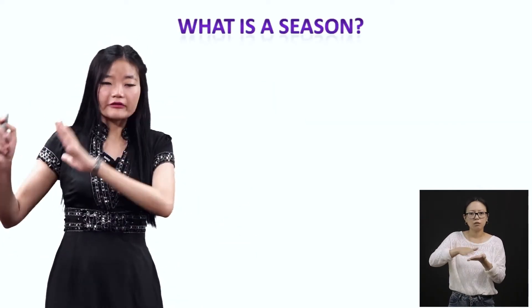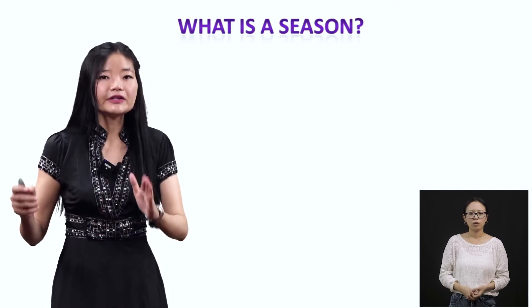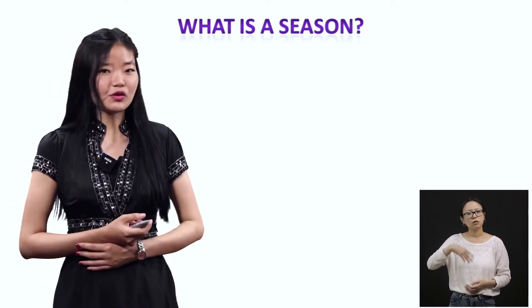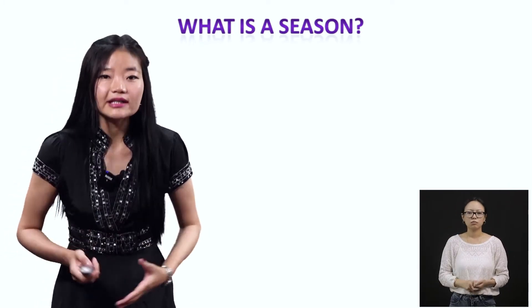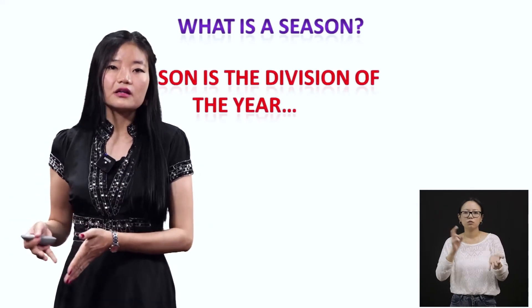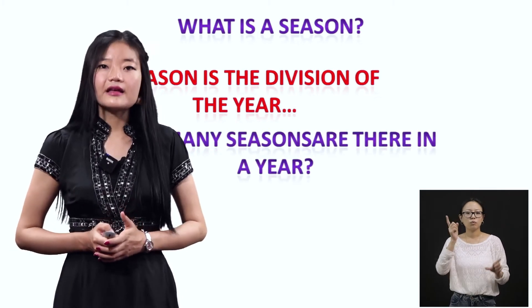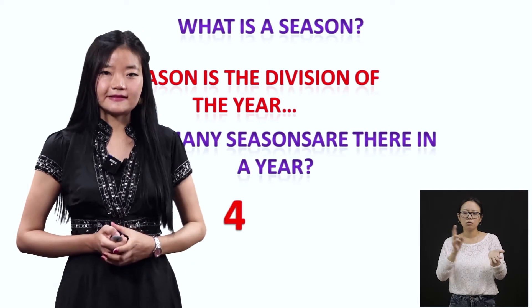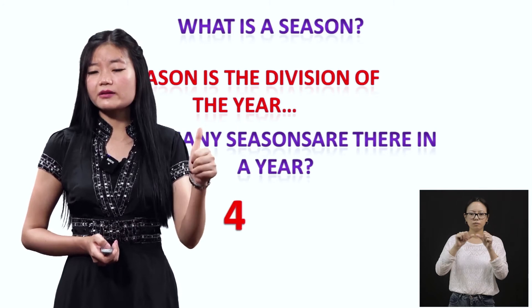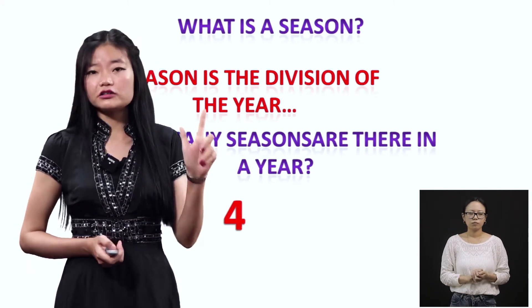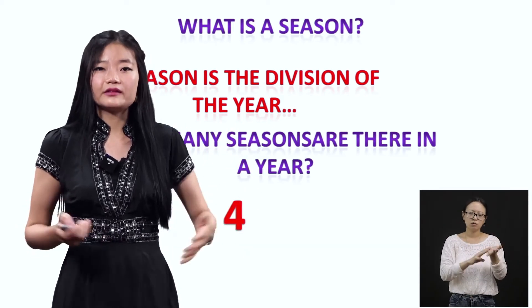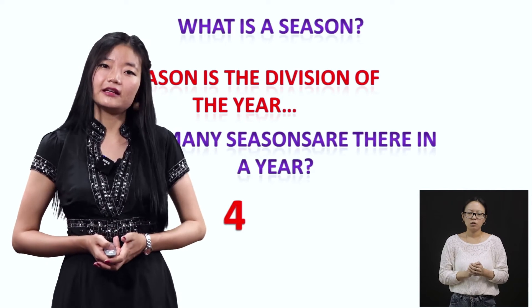Right after animal products, we learned about seasons. What is a season? A season is simply the division of the year. How many seasons are there in a year? There are four seasons. Can you tell me the names of the four seasons? They are spring — S-P-R-I-N-G — autumn — A-U-T-U-M-N — summer — S-U-M-M-E-R — and finally winter — W-I-N-T-E-R.